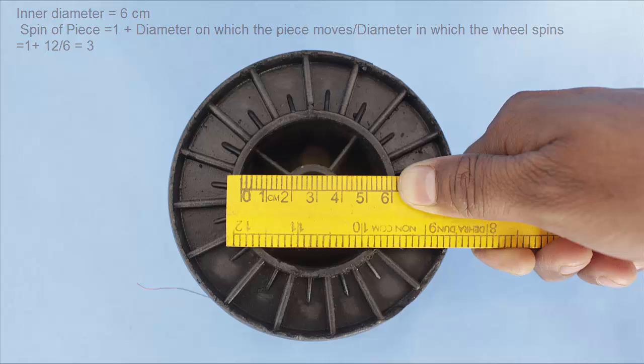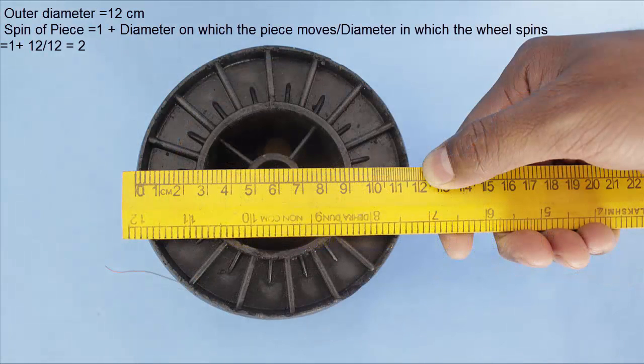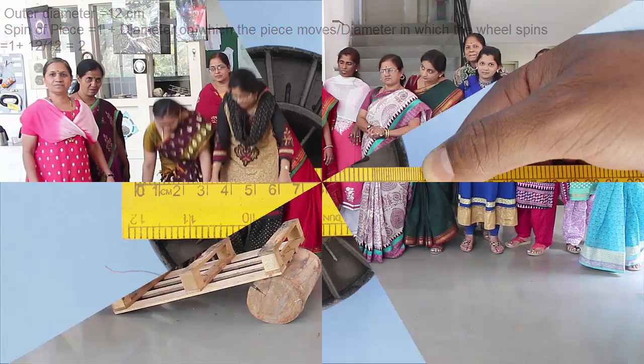In the former case, the diameter of the wheel on which it spins and the diameter of the piece is the same, and so the piece moves 1 plus 12 by 12 which is 2.